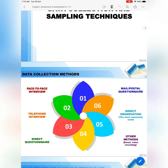So, data collection methods. We have 6 methods here. Number 1 is face-to-face interview. Number 2, telephone interview. Number 3, direct questionnaire. Number 4, mail or postal questionnaire. Number 5, direct observation — the most commonly used. And the last one is other methods such as email and video recording.